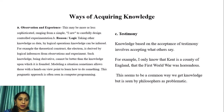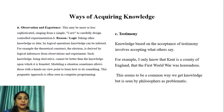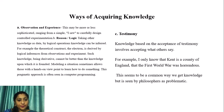Ways of acquiring knowledge include: observation and experience; reasoning and logical thinking; testimony; and revelation. Acquiring knowledge through observation and experience may range from a simple observation to carefully designed controlled experimentation. Through reason and logic, taking other knowledge as data, new knowledge can be inferred — for example, the theoretical construct of the electron is derived by logical inference from observations and experiments. Such derivative knowledge can even be better than the knowledge upon which it is founded. Modeling a situation sometimes allows those with a hands-on viewpoint to learn how to do something — this pragmatic approach is often seen in computer programming.